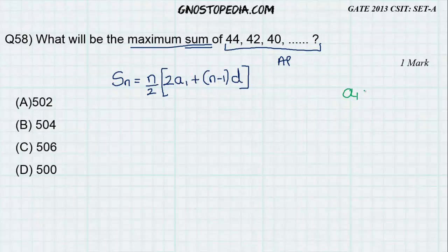Now, the value of A1, that is the first term, is 44. The value of D, that is the common difference, is 42 minus 44, that is minus 2. Please do not make a mistake of taking the value as 2.